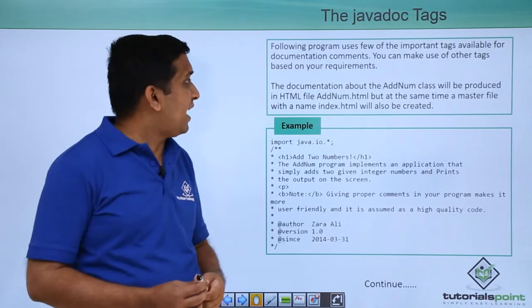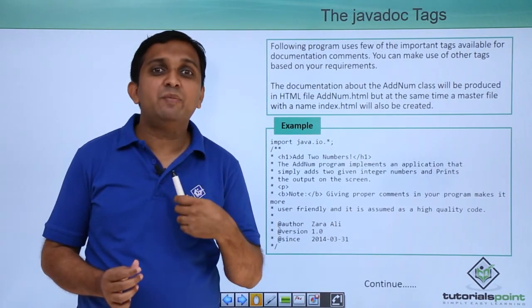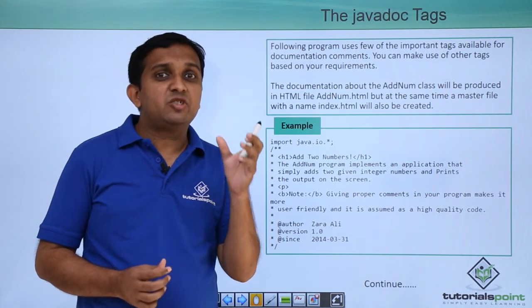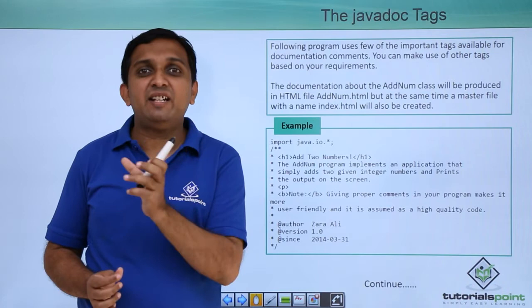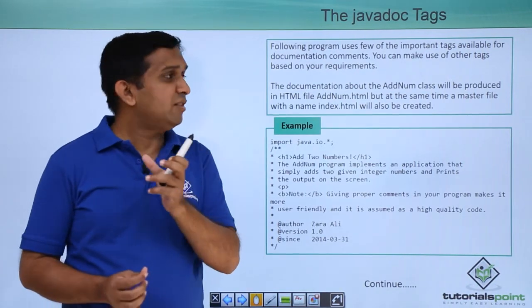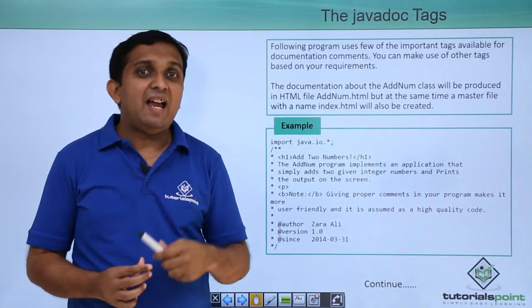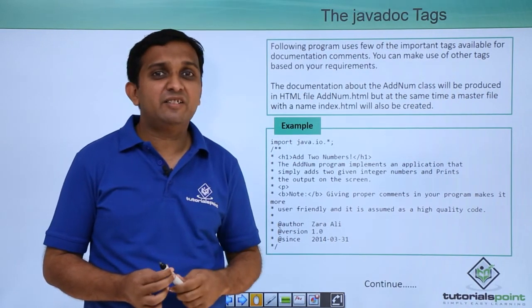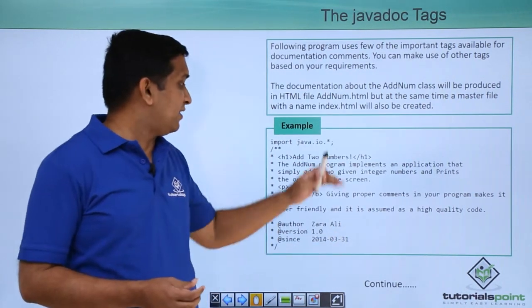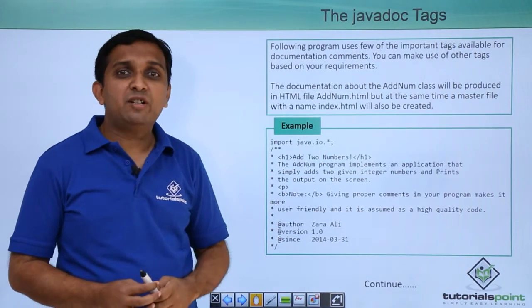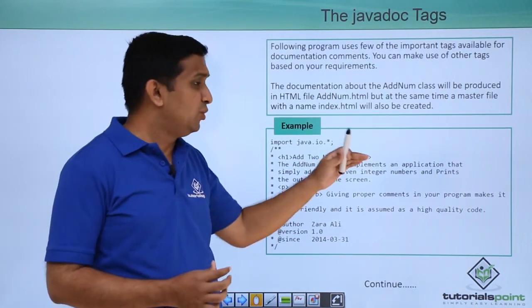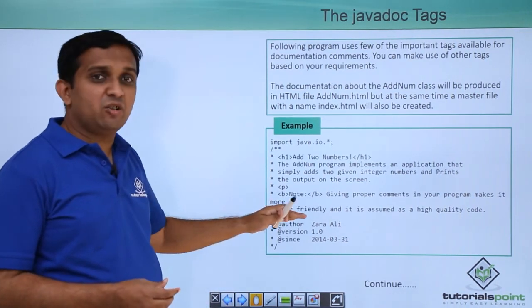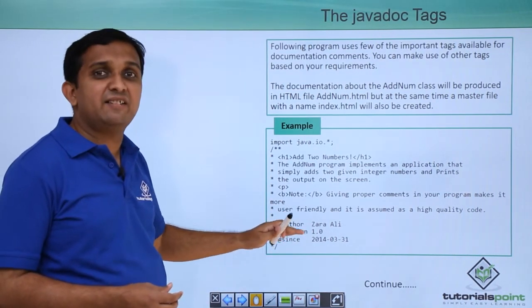Now suppose I have a class which is AddNum class and I am generating documentation for that class using the javadoc tool. Then the documentation file which is created is AddNum.html. At the same time one more file will generate which is index.html. So here is an example where few important tags are used to create the javadoc. So the @author is used, @version, @since.